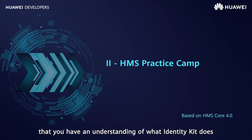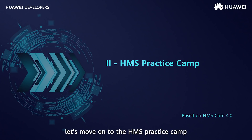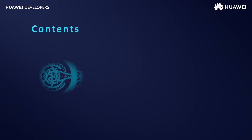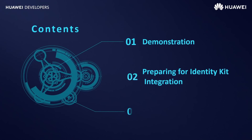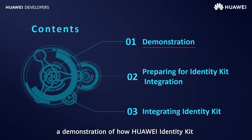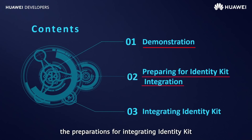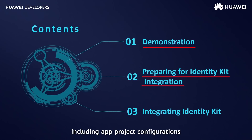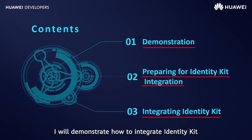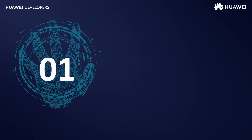Now that you have an understanding of what IdentityKit does, let's move on to the HMS practice camp. This section consists of three parts. In the first part, a demonstration of how Huawei IdentityKit can be used in a specific scenario is provided. In part two, the preparations for integrating IdentityKit will be explained, including app project configurations. Lastly, I will demonstrate how to integrate IdentityKit.